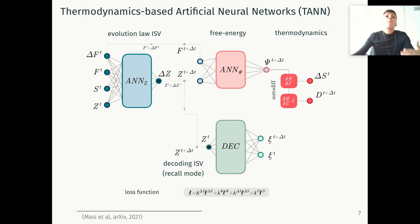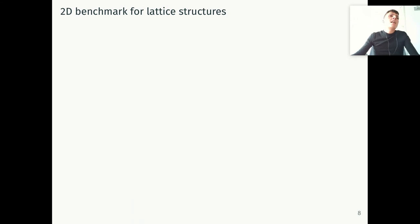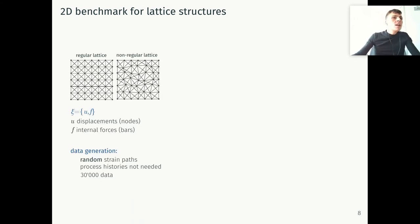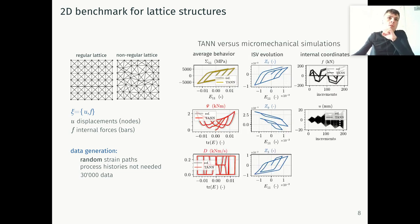Let's see how it behaves with some benchmarks. Let's consider lattice structures within elastic microstructure - we're dealing here with either regular lattice or non-regular lattices. As internal coordinates, we identify the displacement of the nodes and the internal forces along each bar. Nevertheless, this choice is not mandatory, it's pretty free, and it's just up to the problem at hand. Then we generate a random strain path with a micro-mechanical model whose code we developed for this purpose. Once TANN has been trained on this data, we can see how it predicts both the average behavior, for example in terms of stresses, but also how it's able to reproduce the evolution of microstructural fields in terms of internal coordinates.